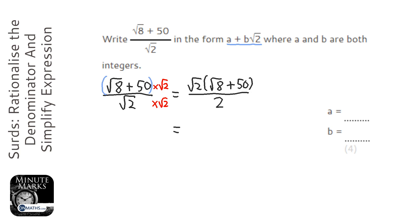Let's expand the top, so root 2 times root 8 is root 16 plus 50 root 2 over 2. Root 16 is just 4.